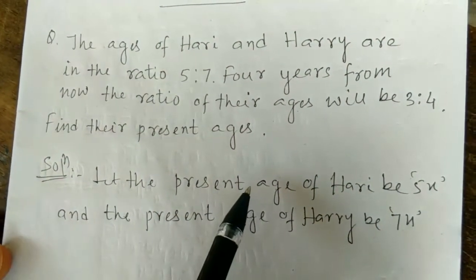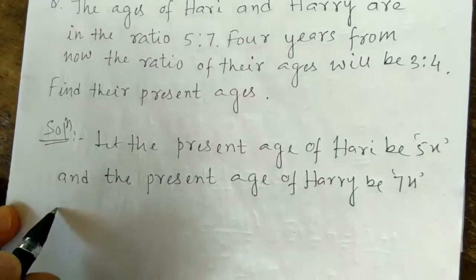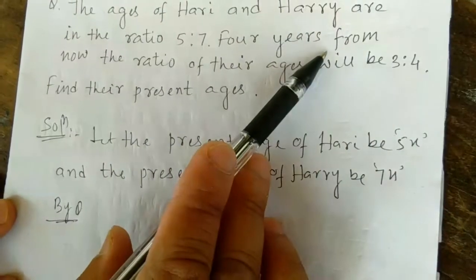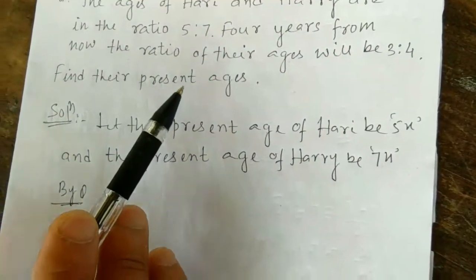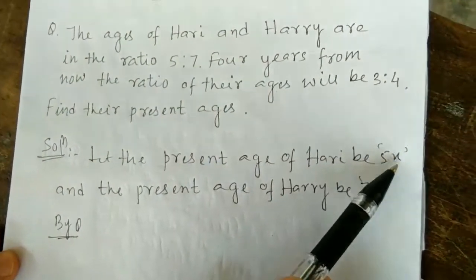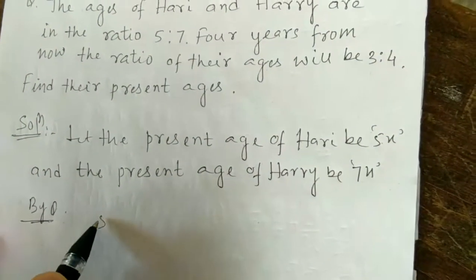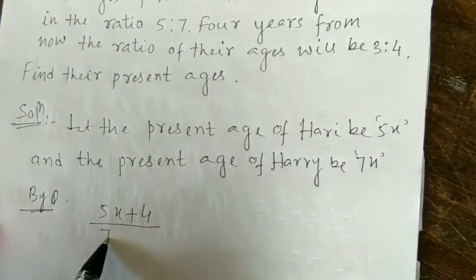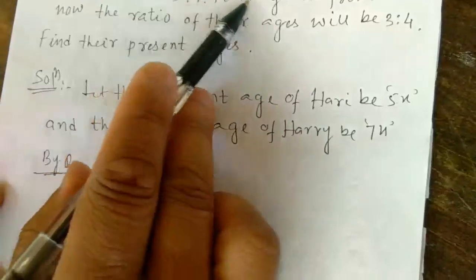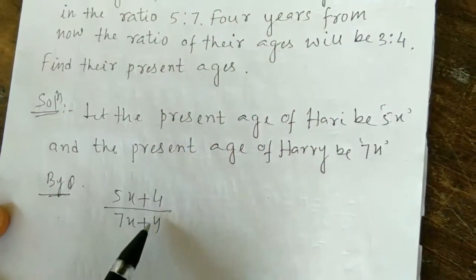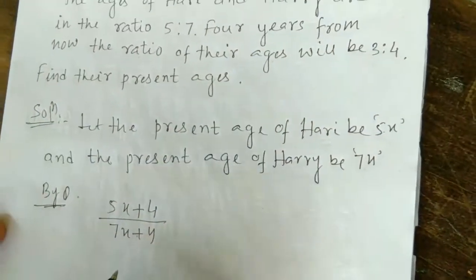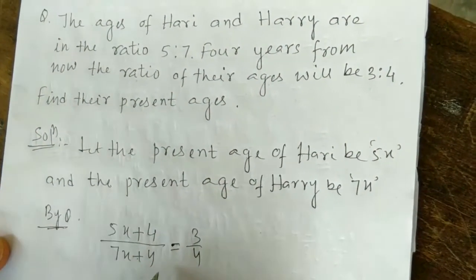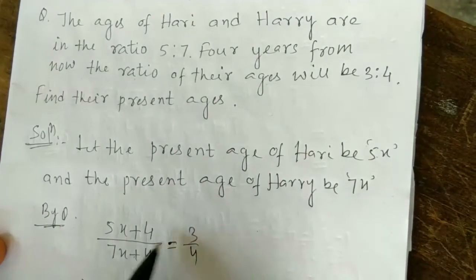It is given 4 years from now, meaning after 4 years. So we add 4 years to both ages. After 4 years: (5x + 4) by (7x + 4). This ratio is given as 3 by 4.